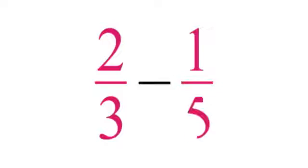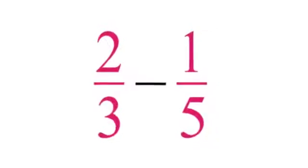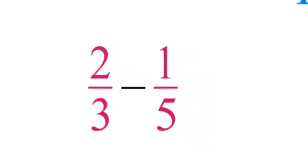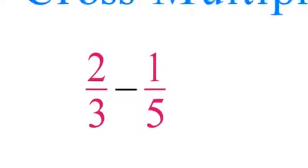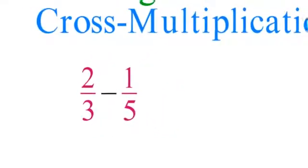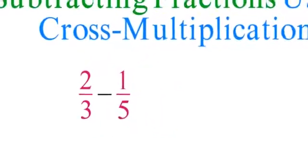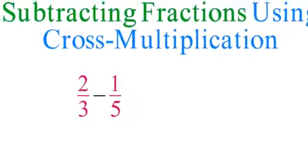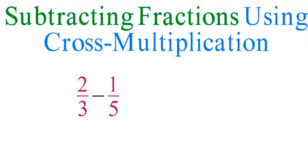Now, consider 2 thirds minus 1 fifth. To solve this problem, you can't use any of the three methods you've already learned for subtracting fractions. As when adding fractions, however, you can use cross-multiplication to turn any pair of fractions into two equivalent fractions that have a common denominator.